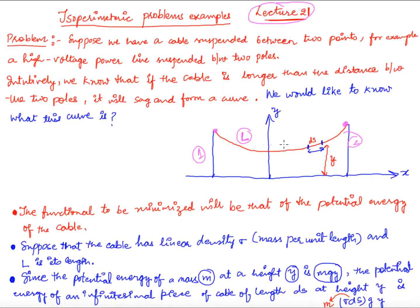Obviously the wire will take the shape such that the potential energy of the wire is minimum — that is the law of nature, that everything wants its potential energy to be minimum. So here we want to minimize the potential energy, and the constraint is that the length of the wire is fixed. This is an isoperimetric problem with two boundary points.